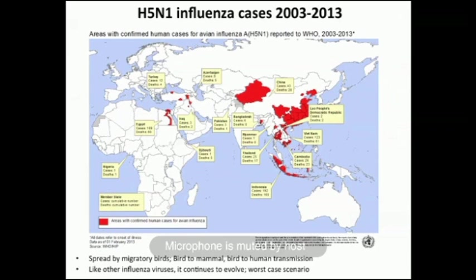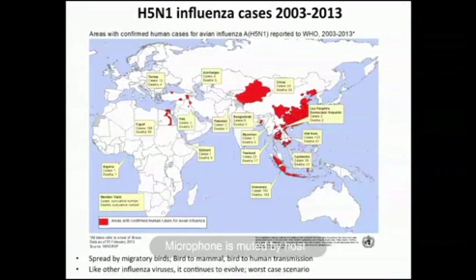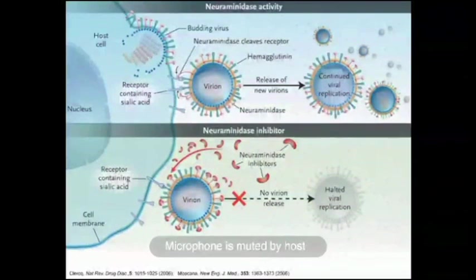The problem is that if you do catch H5N1, you appear to have a pretty good chance of actually dying from it. In Indonesia there were 192 documented cases and 160 deaths. The worst-case scenario would be a highly pathogenic strain of the flu that is also highly transmissible — that could wreak havoc for global health, similar to what happened in the 1918 Spanish influenza outbreak. What I'm going to talk about today deals with the structural biology and dynamics of influenza.